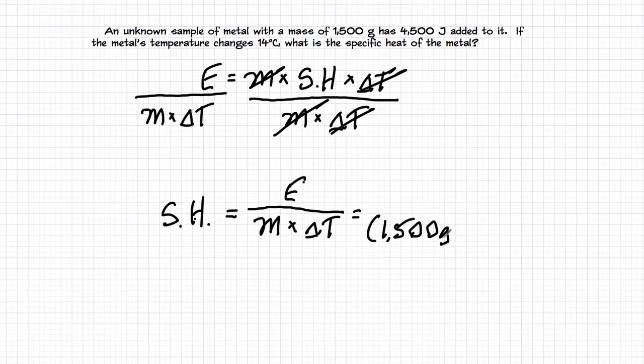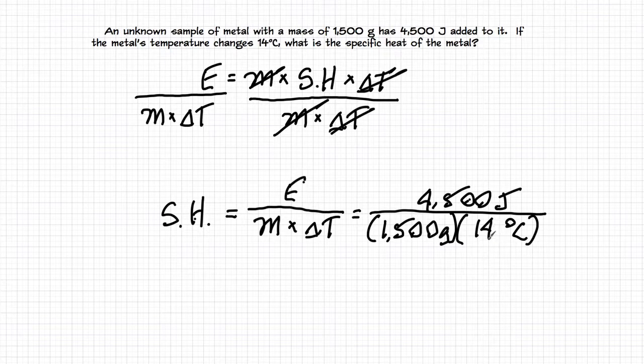My mass is 1500 grams. The change in temperature is 14 degrees Celsius. And the amount of energy that's added is 4500 joules. Now we can check our units but you'll notice that absolutely nothing cancels here. We're stuck with all the units. And that's not surprising because it's a specific heat and those have three units in them.